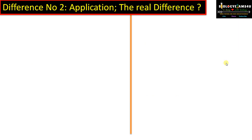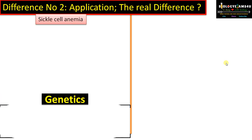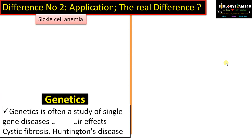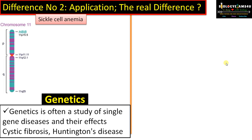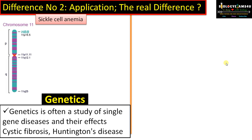Difference number two is regarding application. Genetics is often a study of single gene diseases and their effects — just like sickle cell anemia. Other examples include cystic fibrosis, Huntington's disease, etc. In all these cases, a single gene is focused, and we know the effect of a mutation in that gene.